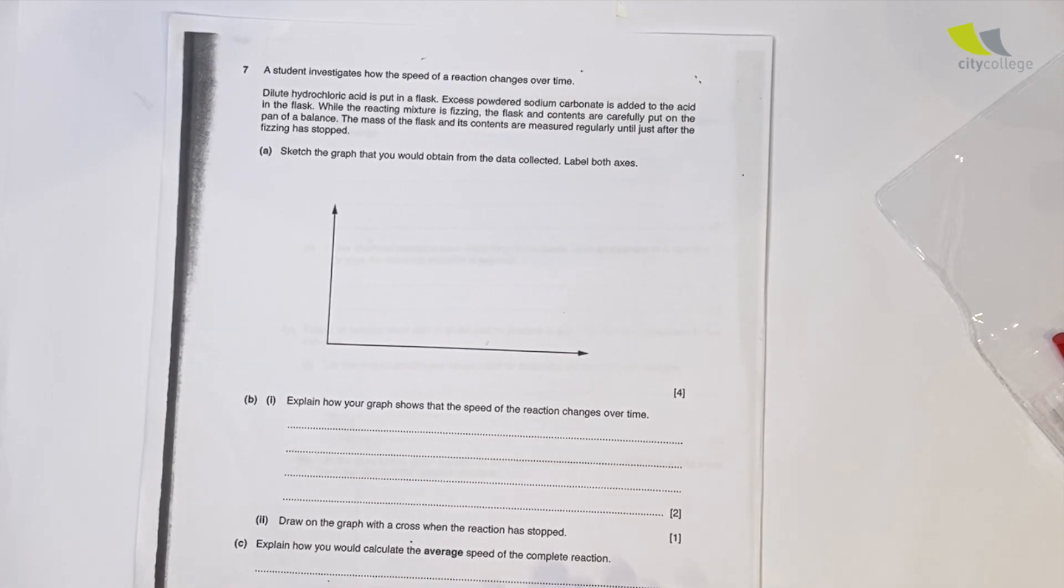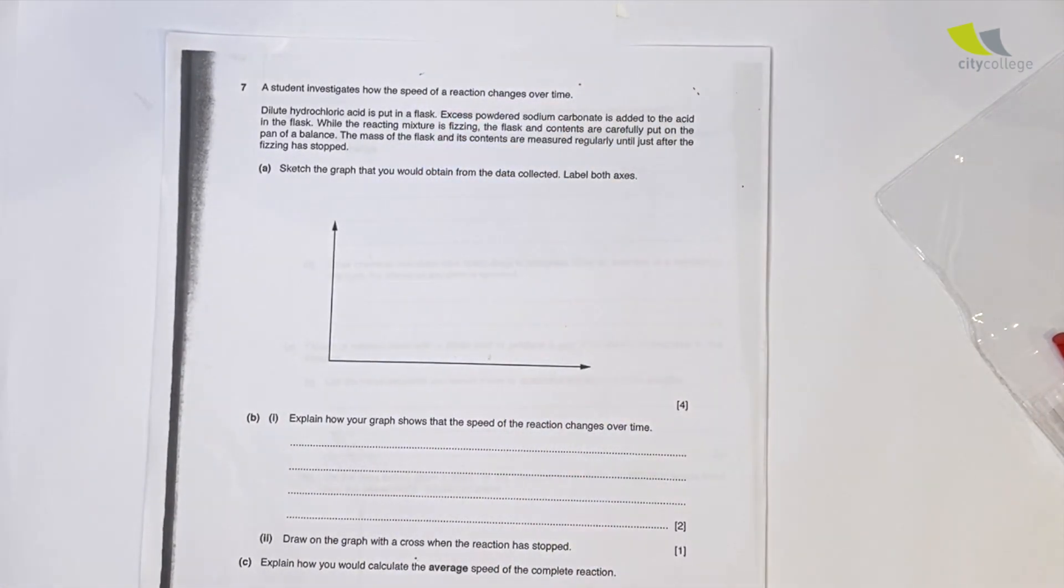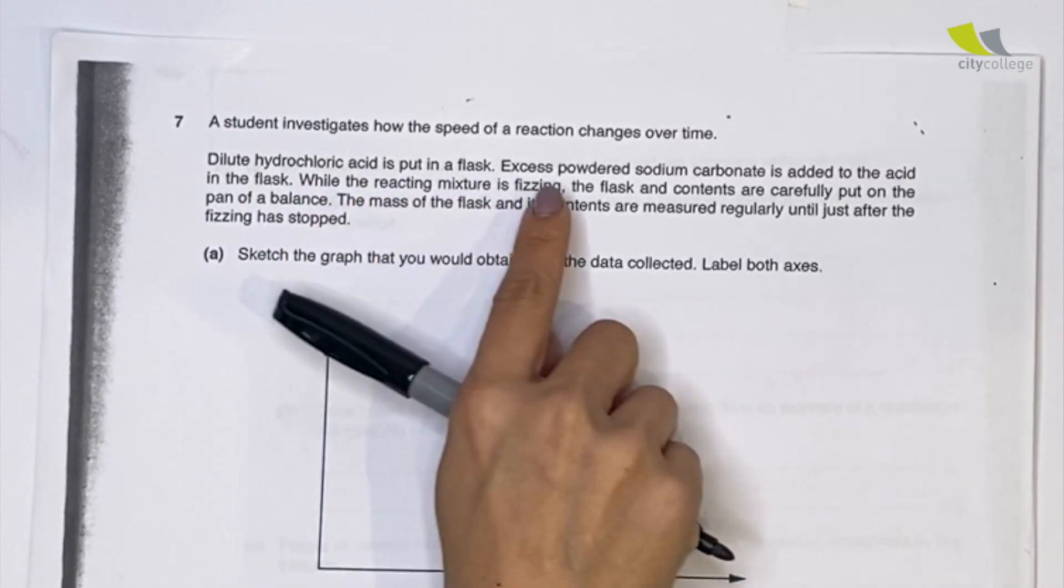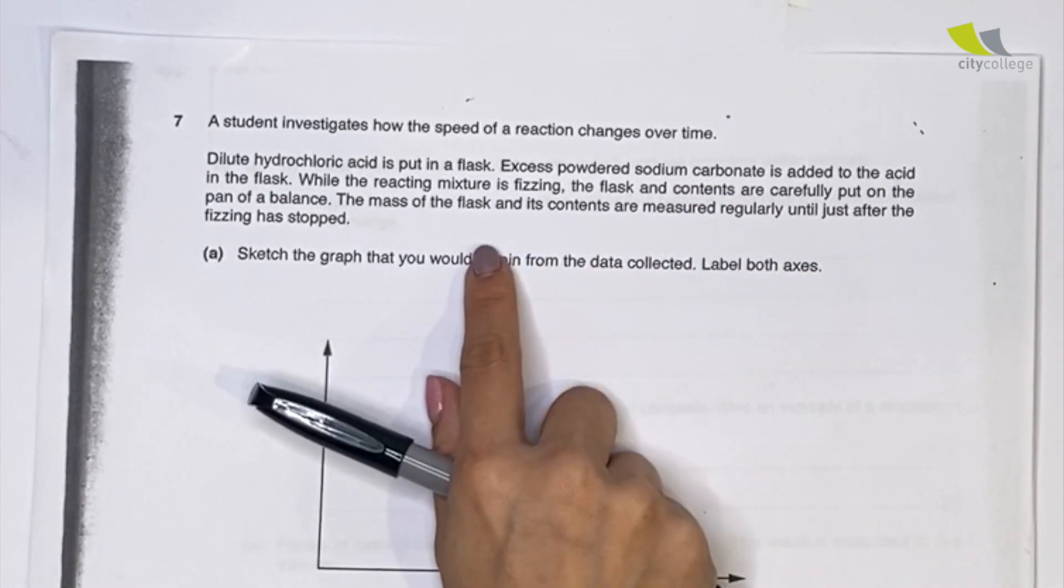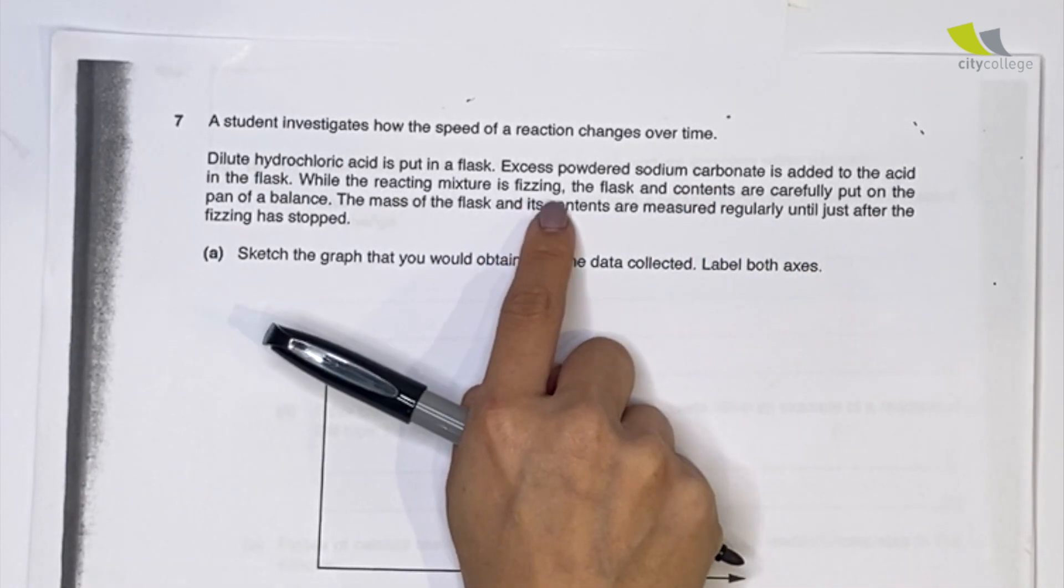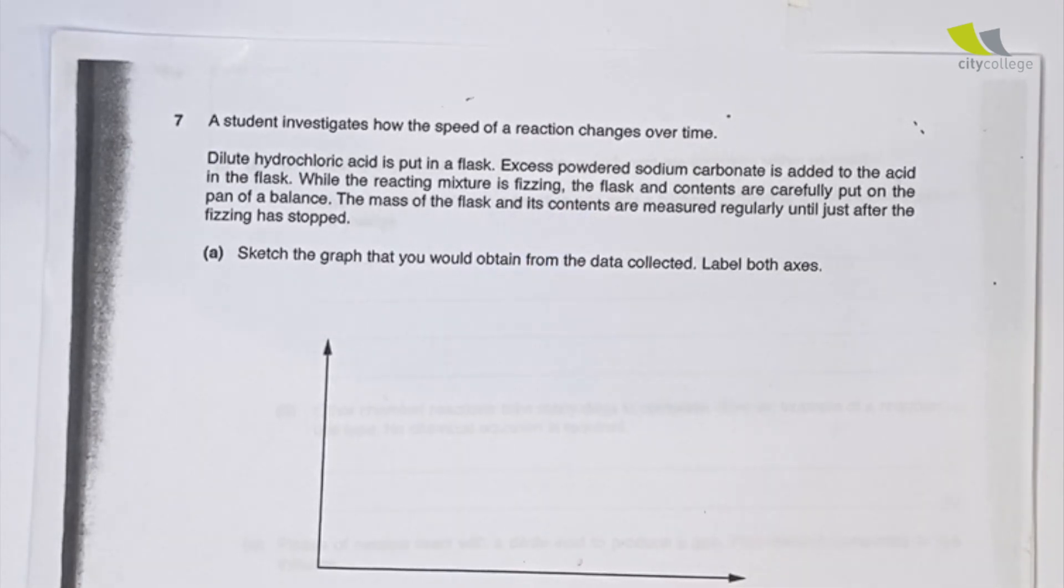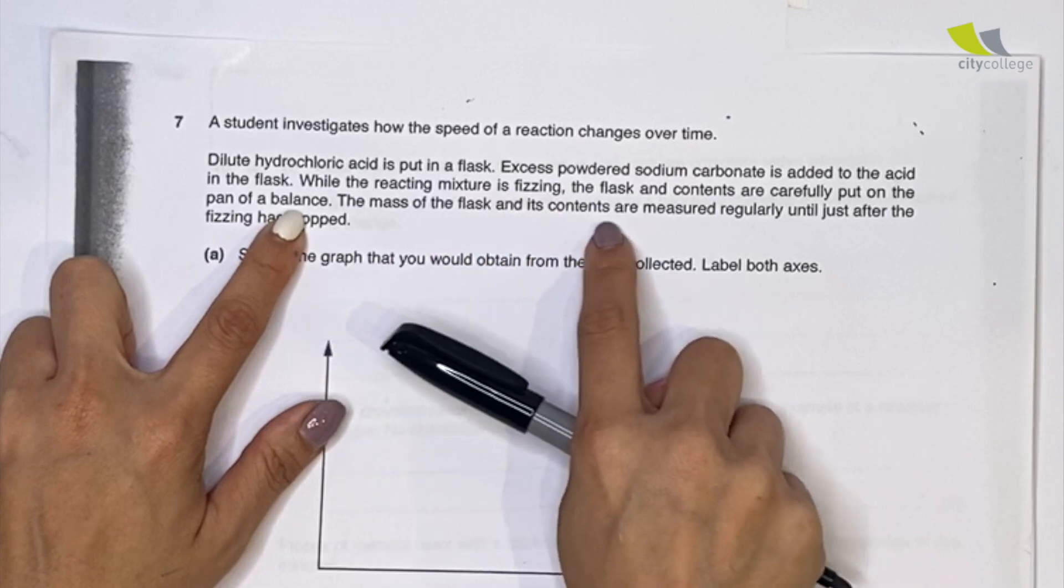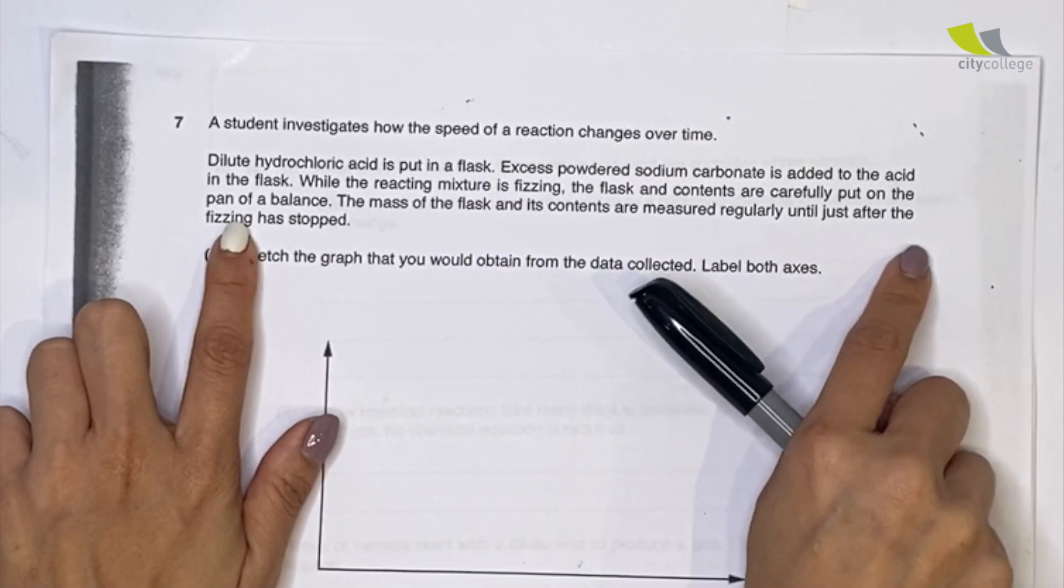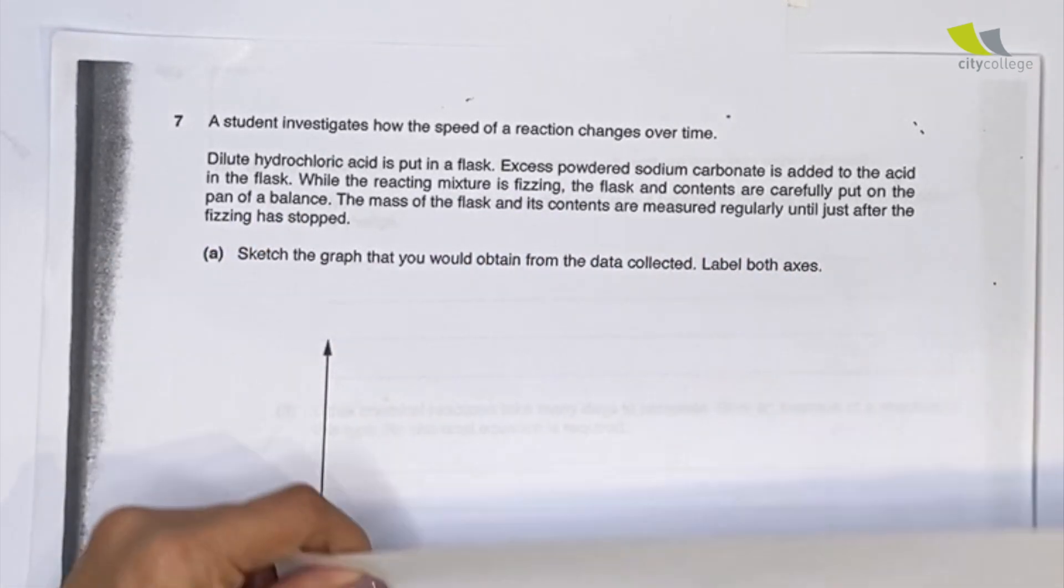As you remember, speed of reaction is about how fast the chemical reaction takes place. Over here they say an acid is put in a flask, excess powdered sodium carbonate is added to the acid in the flask. While reacting, the mixture is fizzing and the flask and the content are carefully put on the pan of a weighing scale. The mass of the flask and its content are measured regularly until just after the fizzing has stopped.